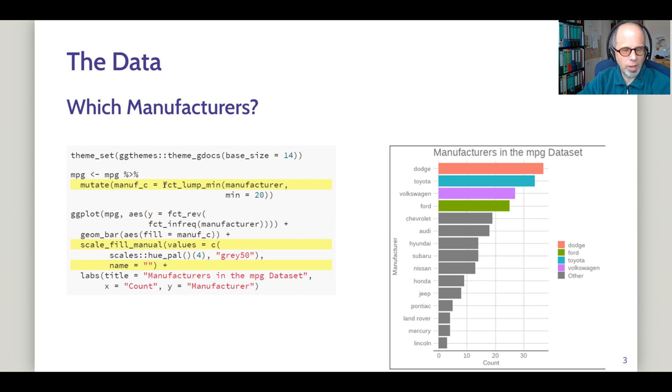I used the forcats package with the great factor lump min function to make this recoding. All manufacturers with fewer than 20 cars in this dataset get assigned to the others category. And then I have a manual color scale here, scale fill manual, to provide the first four colors of the ggplot default color scheme. And then all the other manufacturers are displayed in gray.